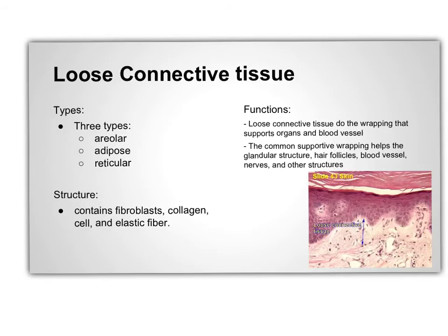There are three types of loose connective tissue: areolar, adipose, and reticular. Areolar and adipose are the most active and they usually stay together. They are located in blood vessels, nerves, and ducts. Inside the connective tissue there are fibroblasts, collagen, cells, and elastic fiber. Their job is to wrap and support the organs and keep them together to make a good structure. They also support the blood vessels and wrap around glandular structures, hair follicles, blood vessels, and nerves.